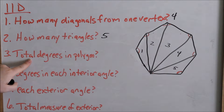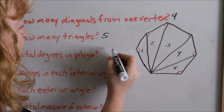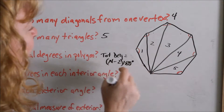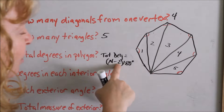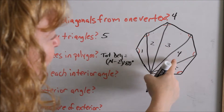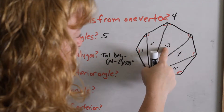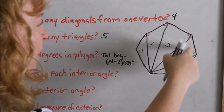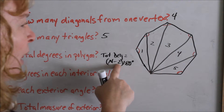Number three asks: what is the total degrees in the polygon? The formula says total degrees equals N minus 2 times 180. Our polygon is seven-sided: seven minus two equals five — in other words, we created five triangles. There are 180 degrees in each triangle, so we take five triangles times 180 degrees to get the total. The number of sides minus two tells you how many triangles you can create, and that's where this formula comes from.